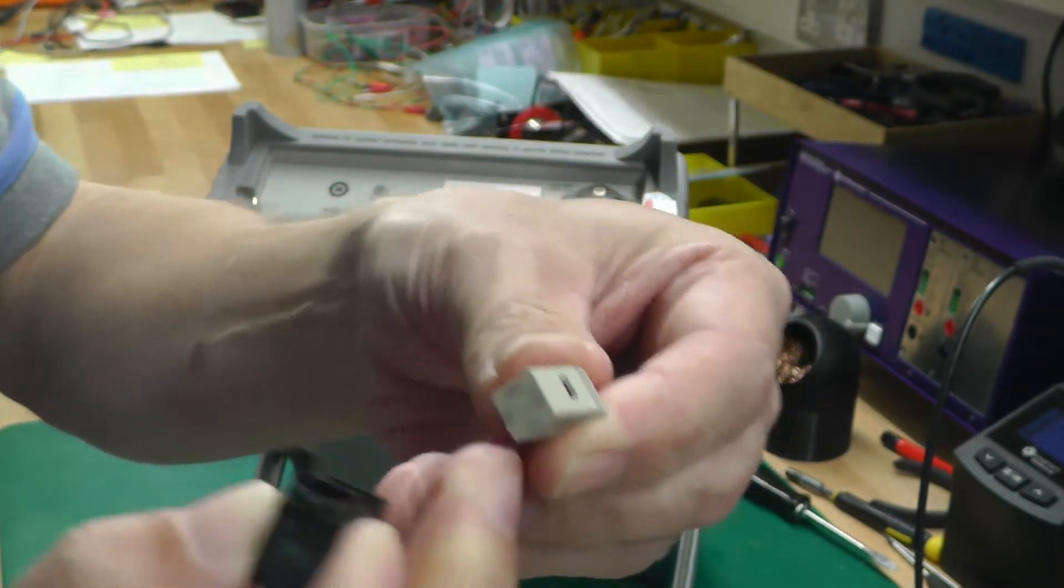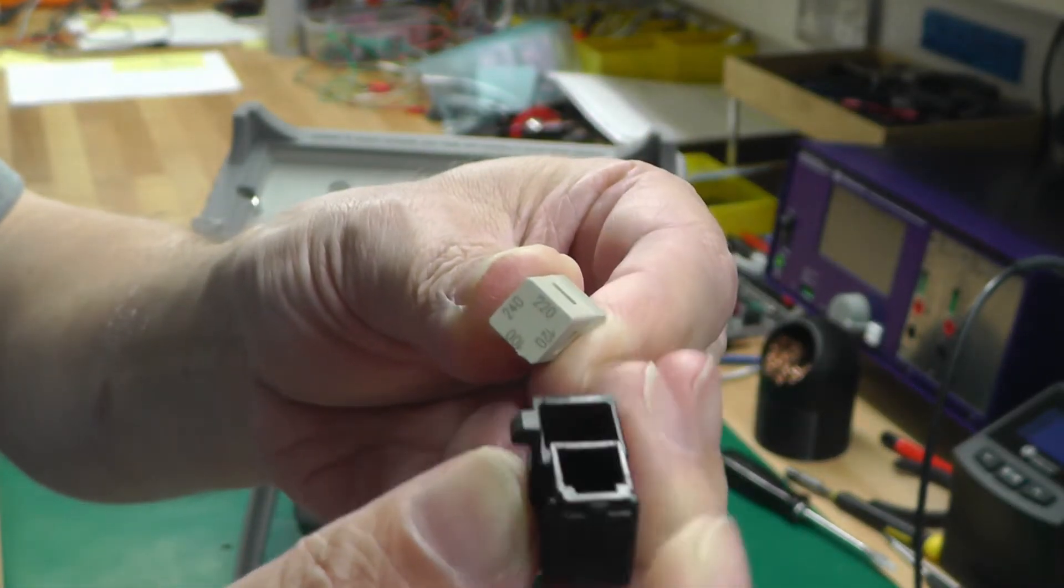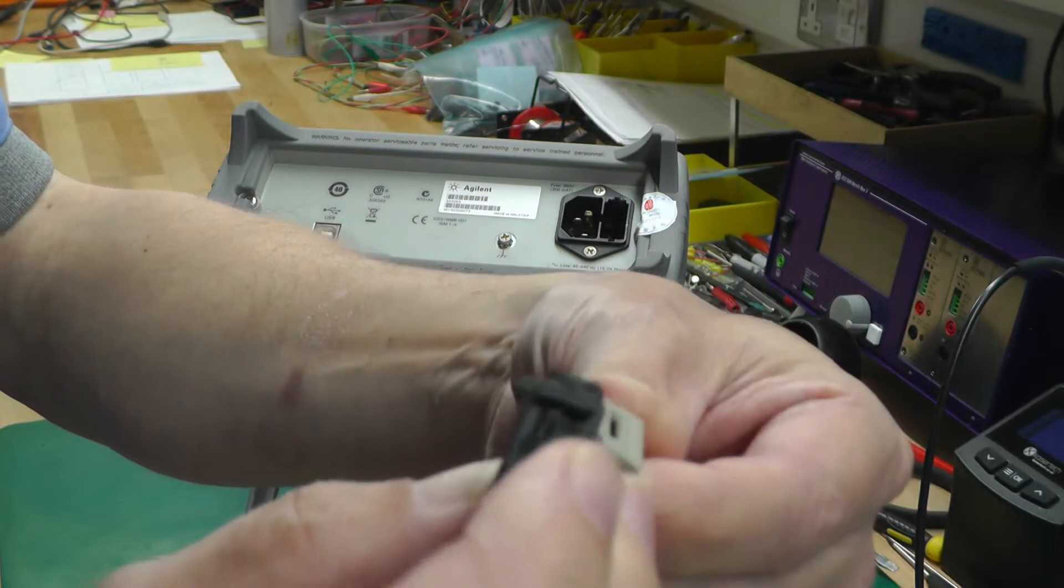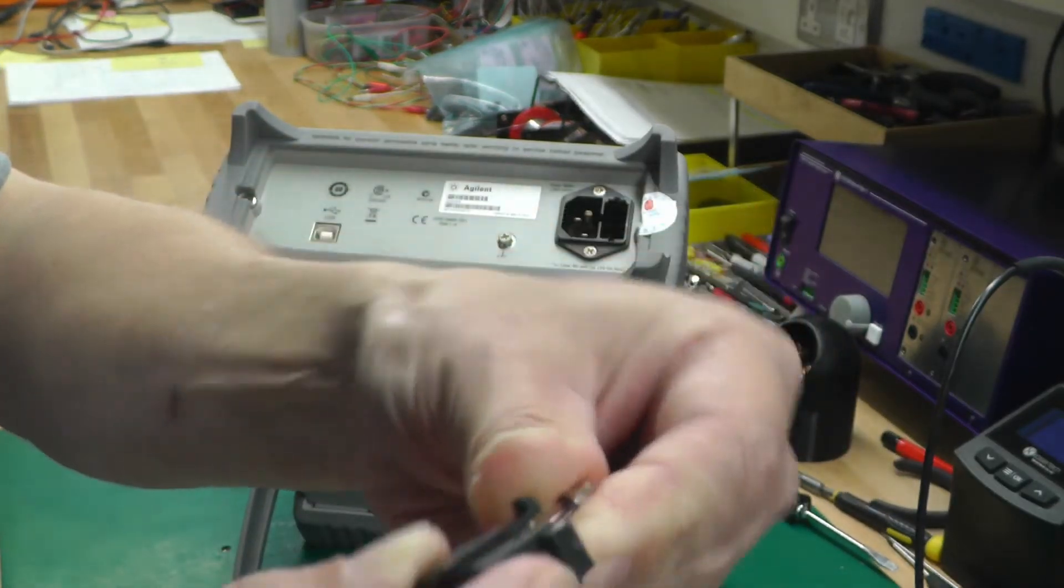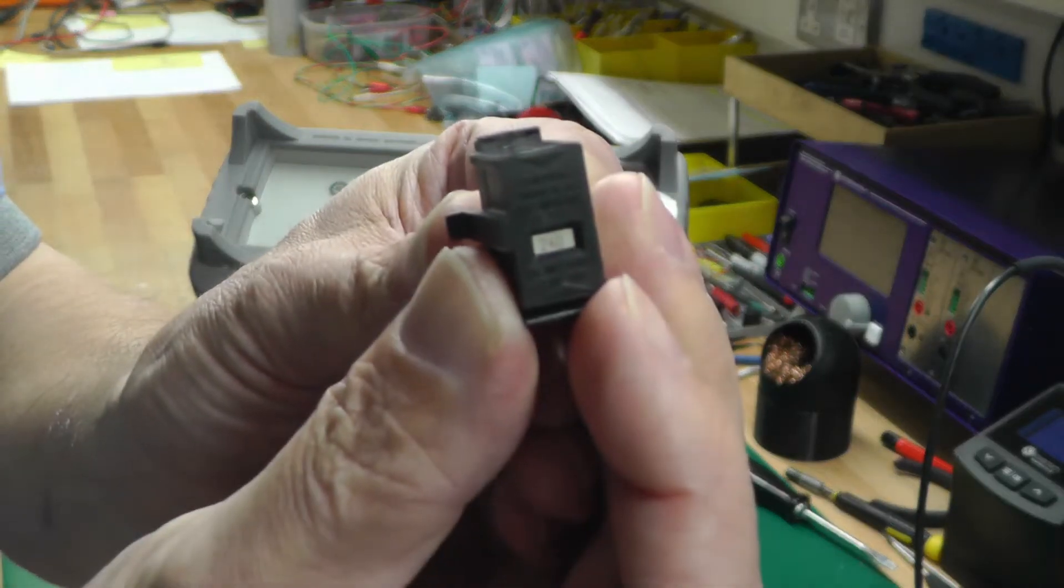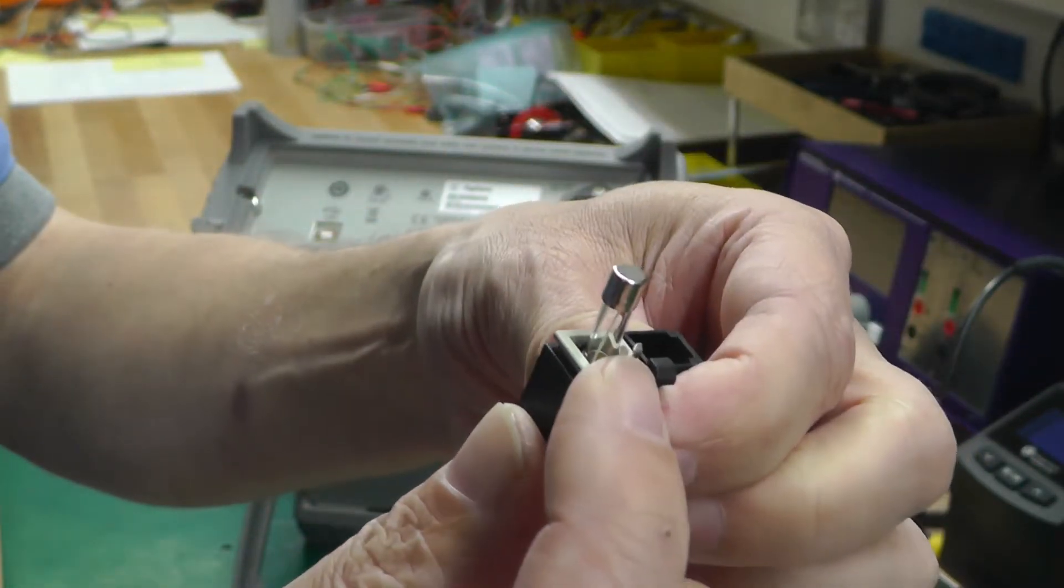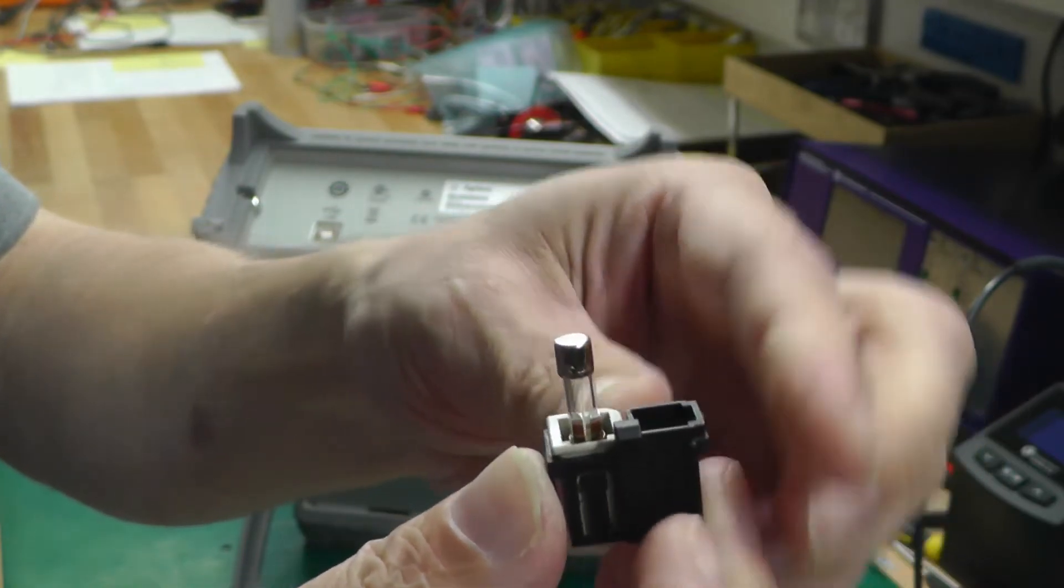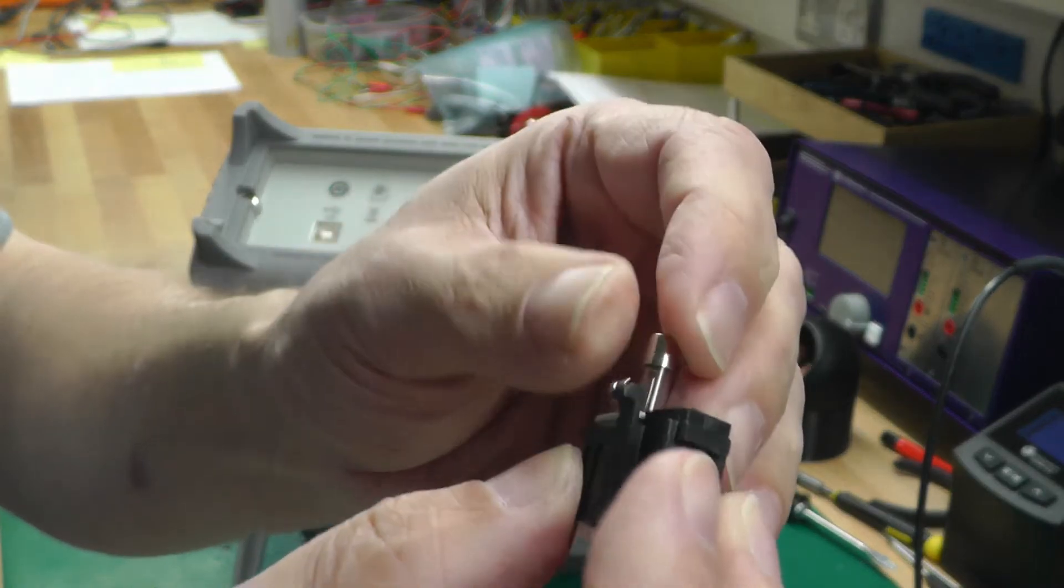You can see it's got the different voltages on it, and you just turn it around to the voltage you require. So I'll turn it around to 240. That's it set for 240 volts. Basically this contact here then goes into the receptacle down in the unit and makes contact for the 240 volt tap on the transformer.